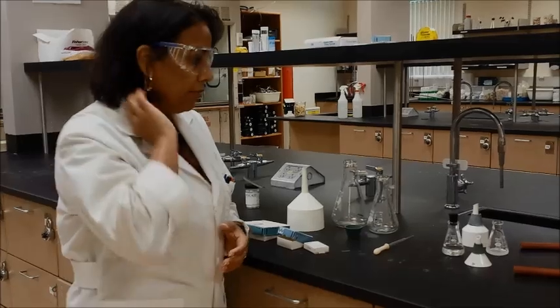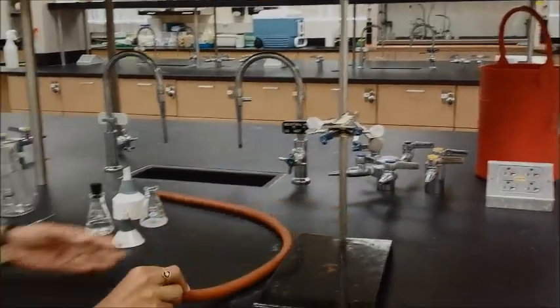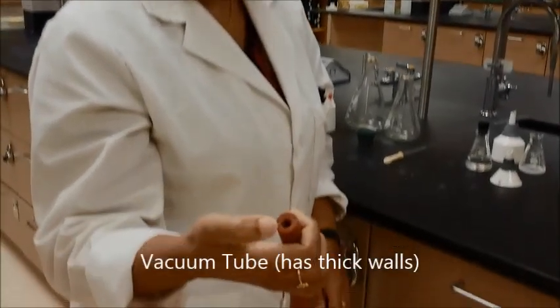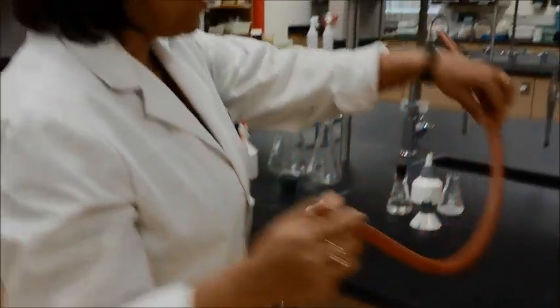You need a few things for vacuum filtration. You will need a clamp stand, you will need a clamp, you will need a vacuum tube, and a vacuum tube is what we call a thick wall tube. There are thin wall tubes also, just make sure you get the thick wall tube for vacuum.